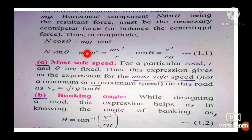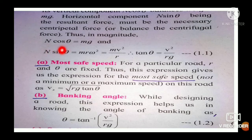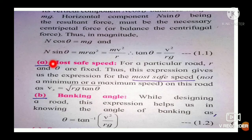Without considering the force of static friction, the two forces acting on the vehicle are: first, Mg acting vertically downward, and second, normal reaction N. This normal reaction N is resolved into two components: vertical component N cos θ, which balances the weight Mg, and horizontal component N sin θ, which provides the necessary centripetal force.